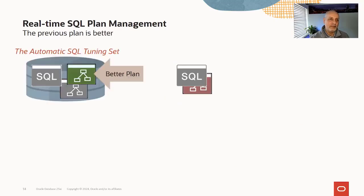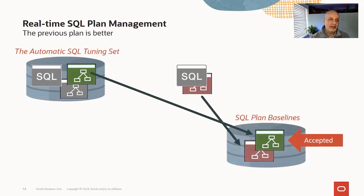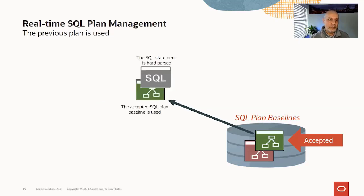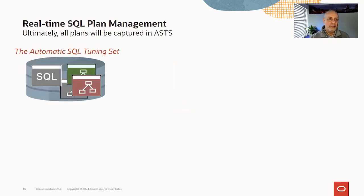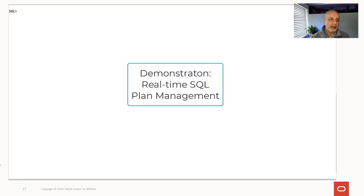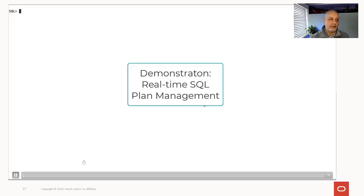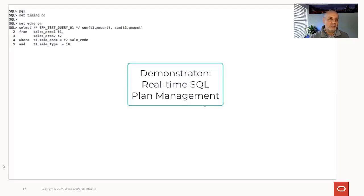What happens if the old plan is better? We'll create SQL plan baselines, but this time we're going to accept the old previous plan. This is the case that real-time SPM is specifically designed to trap — where a new plan performs poorly. We reinstate the previous plan so that the accepted previous plan gets used in future. Over time we continue to gather the different plans seen in the automatic SQL tuning set.